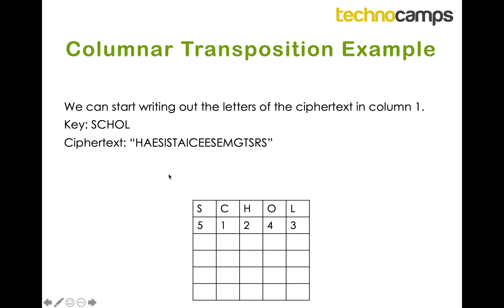Now I write out the cipher text into the columns. I always start with column 1, which is the C column here — the middle column. The first four letters H, A, E, S go into column 1 (under C). Then the next four letters I, S, T, A go into column 2 (under H). Then I, C, E, E go into column 3 (under L). The next four go into column 4 (under O) and the final four go into column 5 (under S). My entire cipher text is now written into the grid in column key order.